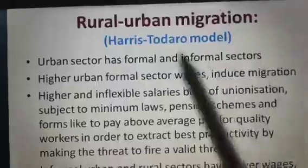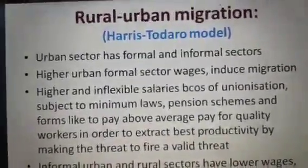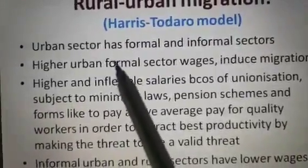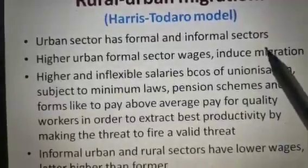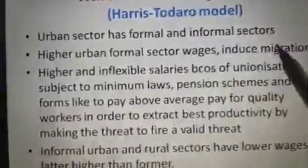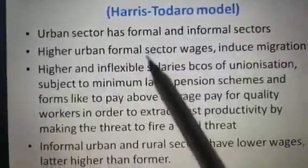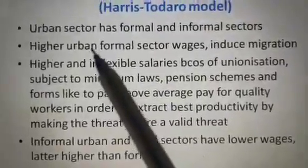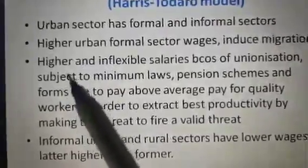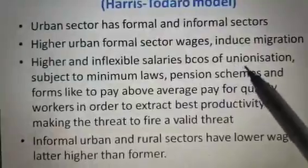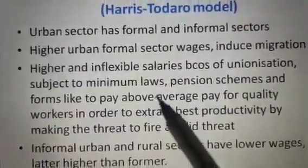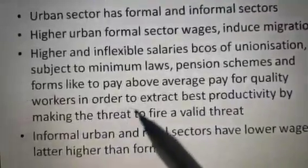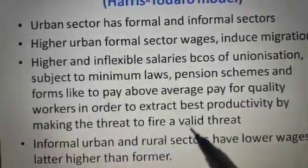Let's start with the concept of the Harris-Todaro model by focusing on rural-urban migration. The urban sector has both formal and informal sectors. Higher urban formal sector wages induce migration. Higher and inflexible salaries result from unionization, minimum wage laws, pension schemes, and firms paying above-average wages for quality workers in order to extract best productivity by making the threat to fire a valid threat.